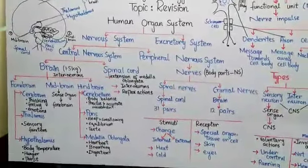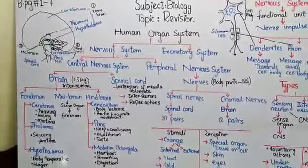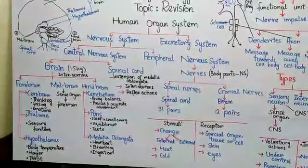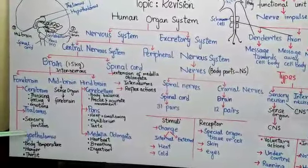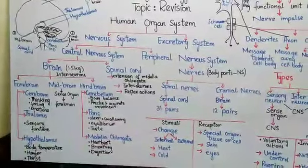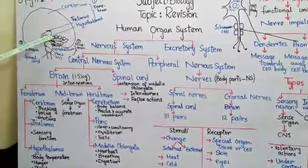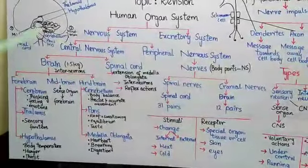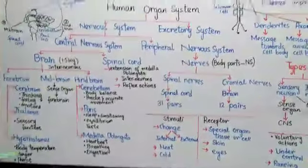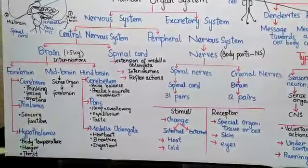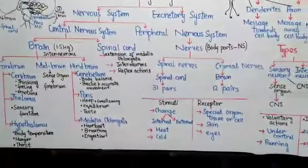Next is the thalamus, which is located within the forebrain. After the thalamus comes the hypothalamus — 'hypo' means lower than, so it is located below the thalamus. The hypothalamus controls body temperature, and also the feelings of hunger and thirst. These are its important internal body functions.